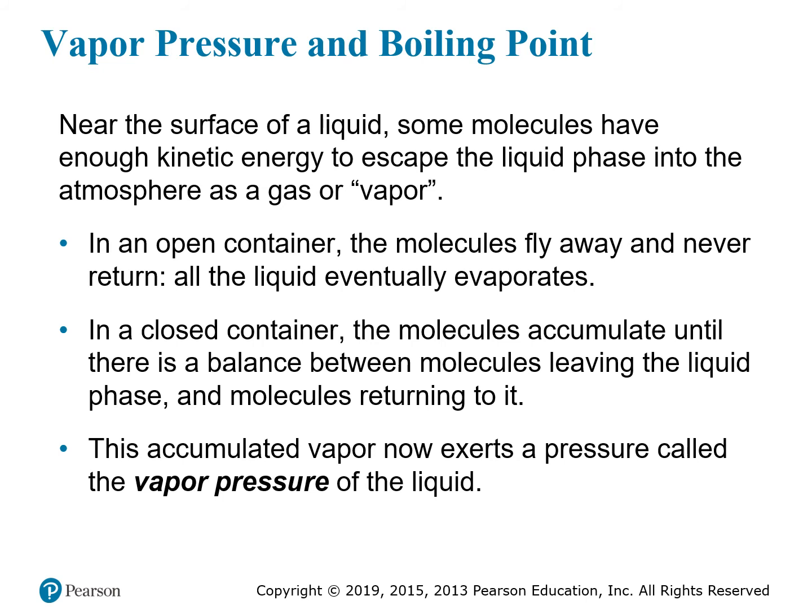In a closed container, particles can't get away. Molecules move from the liquid phase into the gas phase, but some also return from gas back to liquid. At first, molecules rapidly accumulate in the space above the liquid. Eventually there's a balance between molecules going from liquid to gas and gas to liquid, with no net change in particles in the gas phase. At that point, the accumulated molecules form a vapor with a constant pressure — the vapor pressure of the liquid.